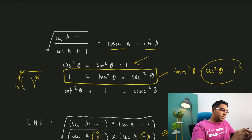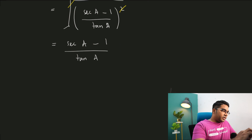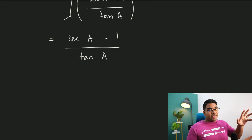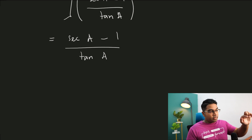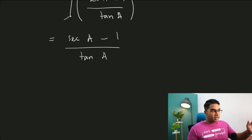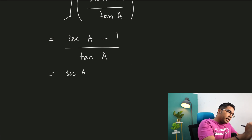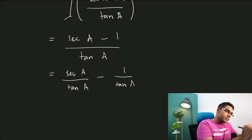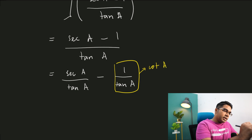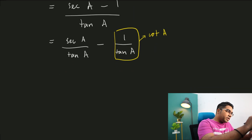We need to reach cosecant and cotangent. Looking at secant a minus 1 over tangent a, we can split the fraction: secant a over tangent a, minus 1 over tangent a. Since 1 over tangent a equals cotangent a, we've already reached one part — the minus cotangent a term.